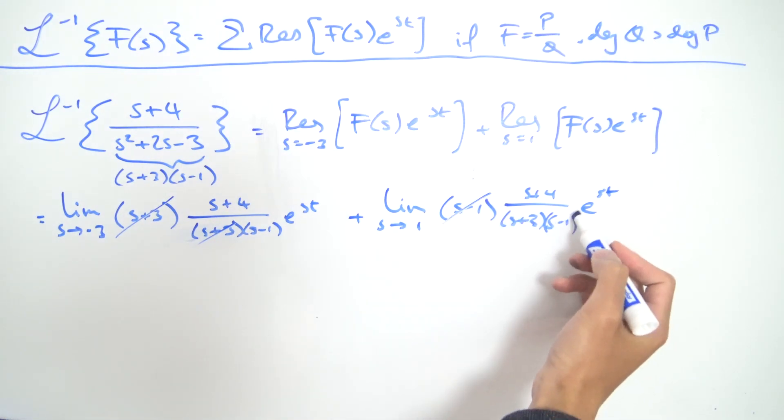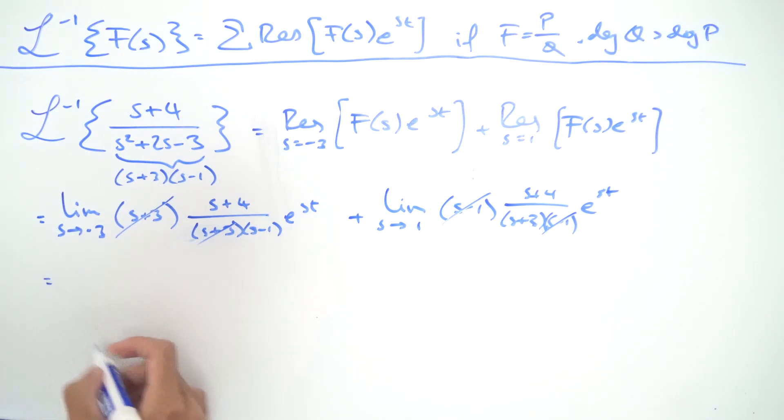And now we can just take the limits everywhere. So as s approaches minus three, well minus three plus four that's one, and then on the denominator we have minus three minus one that's negative a quarter so just write it like this. And then we're going to have as s approaches minus three we're going to get e^(-3t).